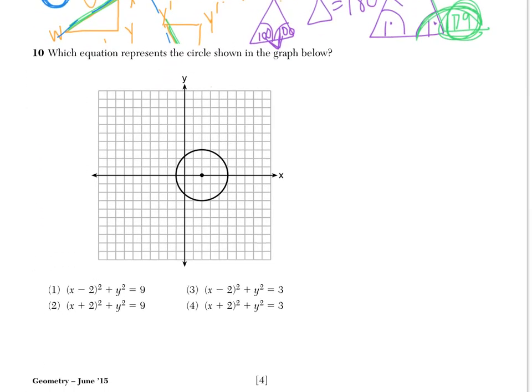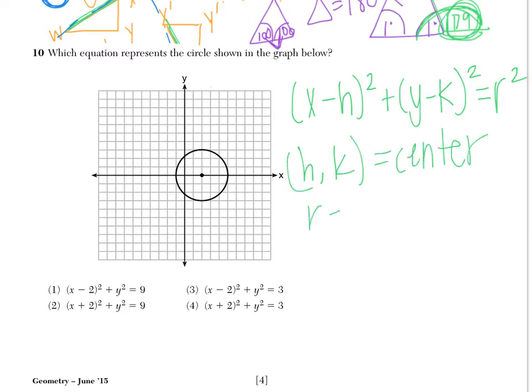Number 10 says, which equation represents the circle shown in the graph below? So the first thing you need to understand about writing the equation is that we start with X minus H squared plus Y minus K quantity squared equals radius squared. Where H and K are the center. And R is the radius.